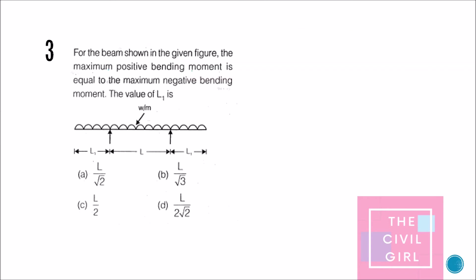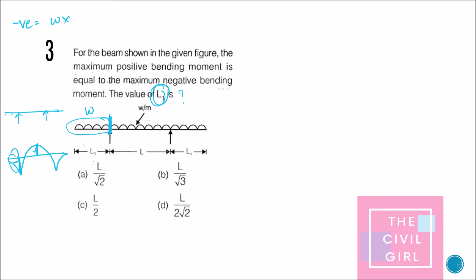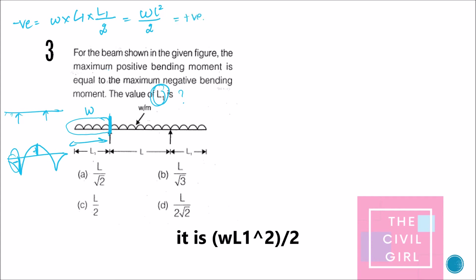Next question: for a beam shown in the figure, the maximum positive bending moment equals the maximum negative bending moment — find the value of L1. This is an overhanging beam on both sides of equal length. The bending moment diagram has negative moments at the overhangs and a positive moment at midspan. The negative bending moment at the overhang is w·L1² / 2.